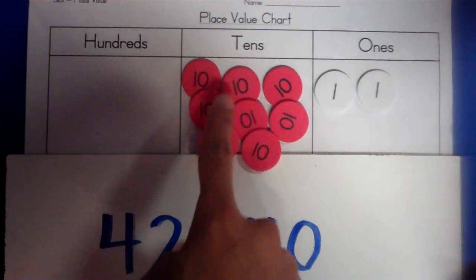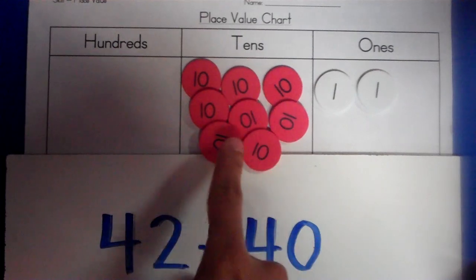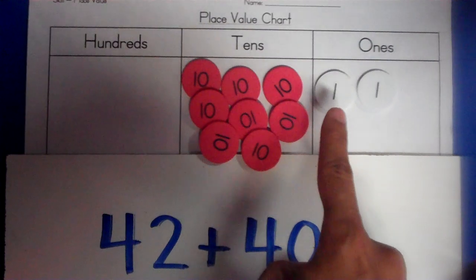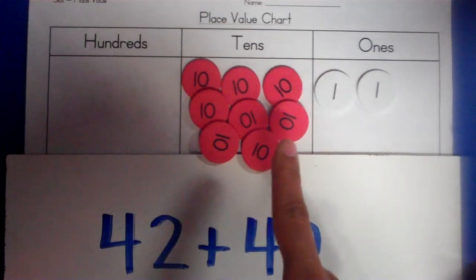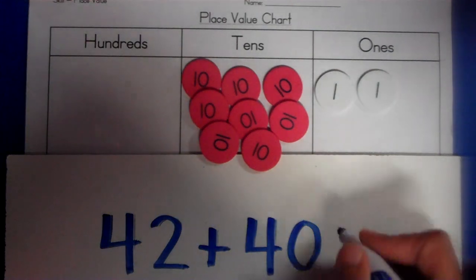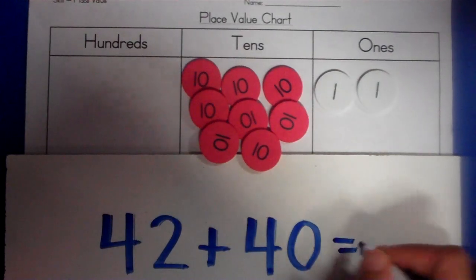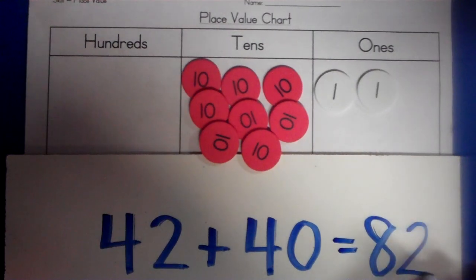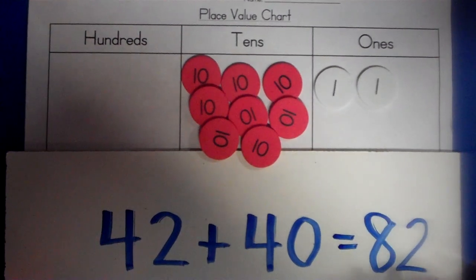1, 2, 3, 4, 5, 6, 7, 8. I have 8 tens, and how many ones? 1, 2 ones. So if I have 8 tens and 2 ones, that means that the answer is equal to 82 because 8 is in the tens place and 2 is in the ones place.